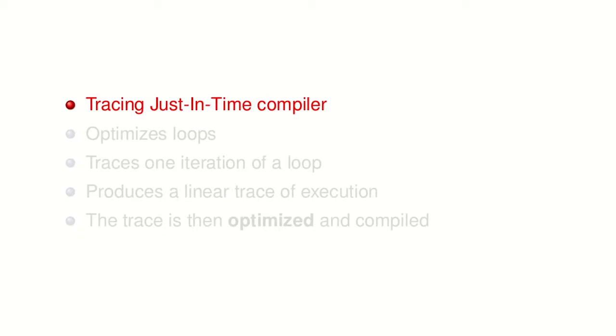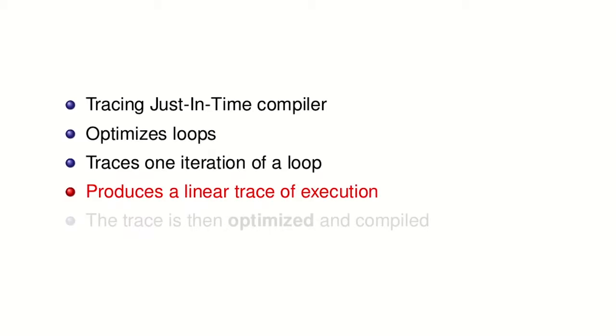PyPy has a tracing just-in-time compiler, so it optimizes loops. As you run your code, it traces each iteration of the loop — for example, you started with two floats and an int, next time two floats and an int, next time a string. Once we've gotten about 1,000 runs through the loop, we identify it as a hot spot and produce a linear trace of the execution of that loop, optimize it, and compile it into assembler. The next time that loop is called, it runs with assembler code rather than Python bytecode.